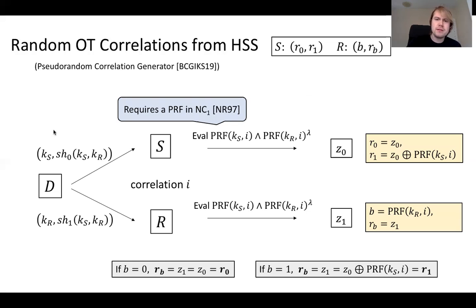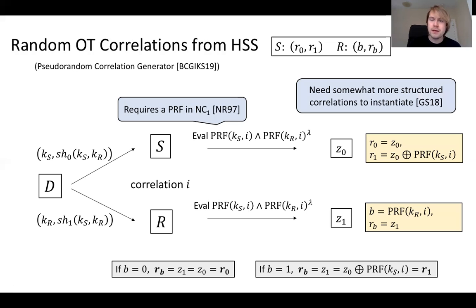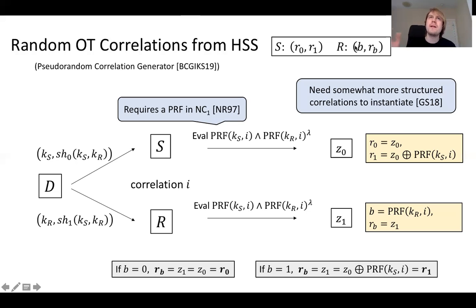A couple of things to note: HSS is only known for circuits in NC1, so this requires a PRF in NC1, which is known from DDH by Naor-Reingold. Also, to instantiate GS18, you need a little more structure than just random OT correlations — in particular, you need some correlations between the different receiver choice bits, which requires a slightly more complicated evaluation procedure.